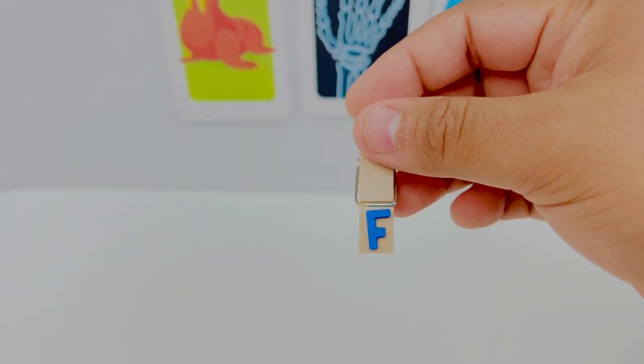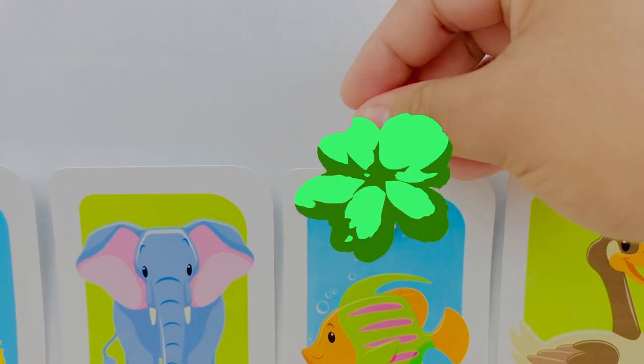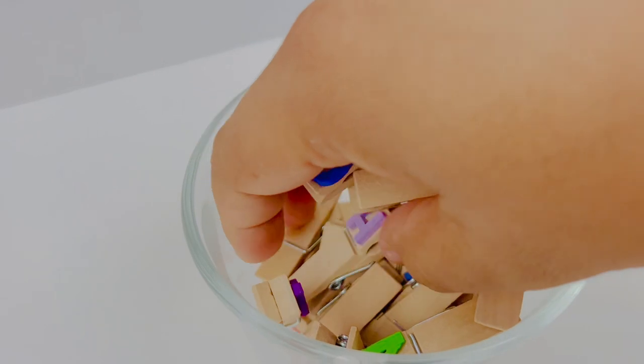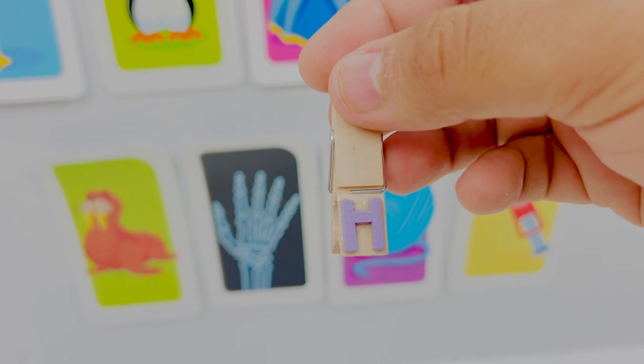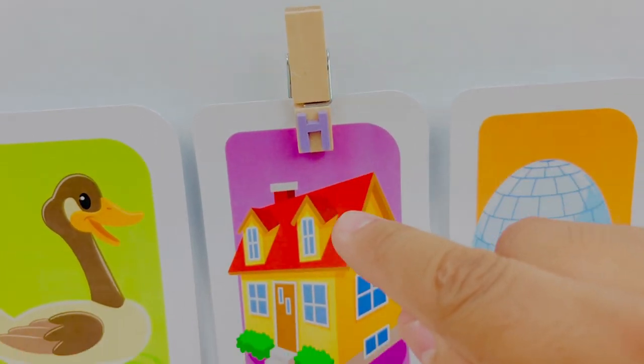This is letter F. F is for fish. F fish. This is letter H. Letter H is for house. H house.